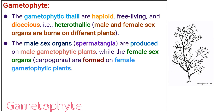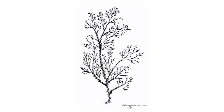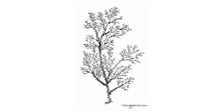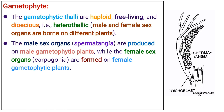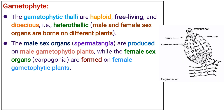The gametophytic thalli are haploid, free-living, and dioecious, that is, heterothalic. Male and female sex organs are borne on different plants. The male sex organs, called spermatangia, are produced on male gametophytic plants, while the female sex organs, that is, carpogonia, are formed on female gametophytic plants.